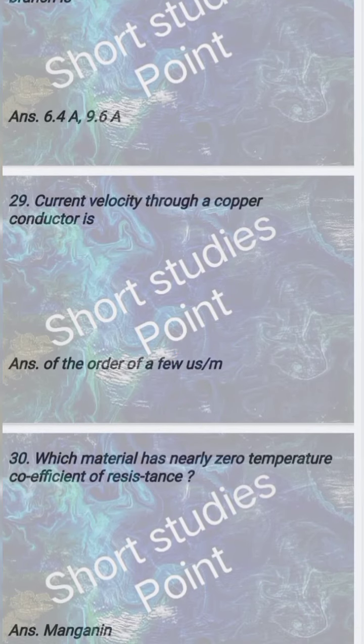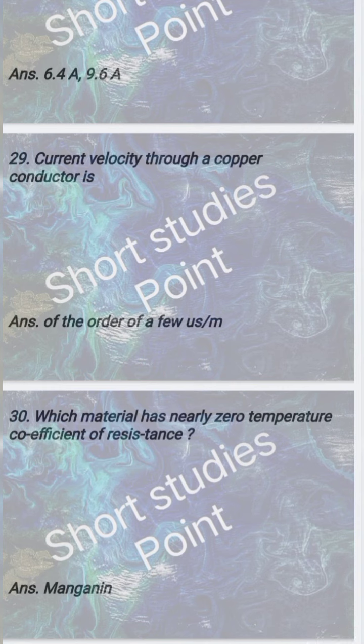Current velocity through a copper conductor is of the order of a few micrometers per second. Which material has nearly zero temperature coefficient of resistance? Manganin.